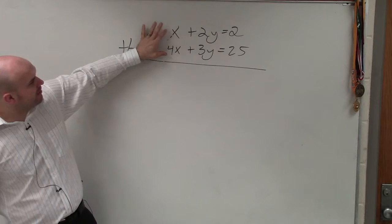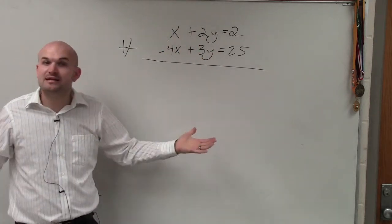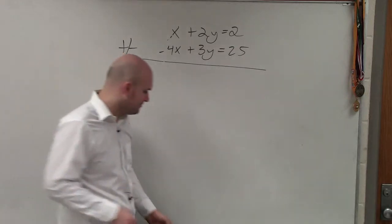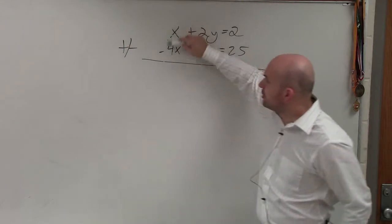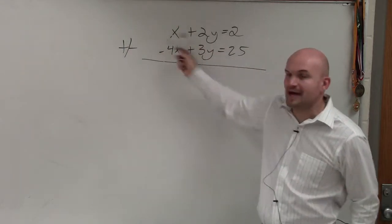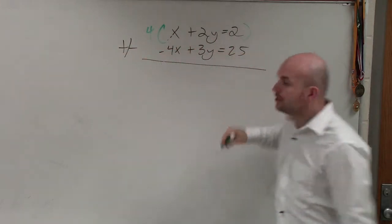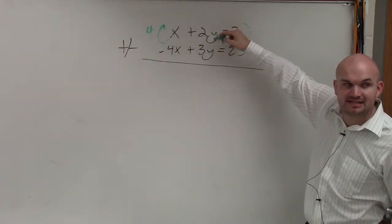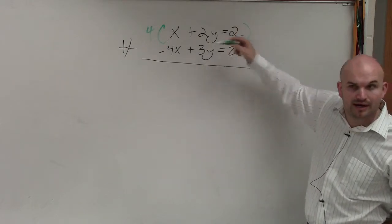And also notice that to get to your common multiple for both of these, I would only have to multiply my top equation by 4. Where here, to get these to 6, I have to multiply the top equation by 3 and the bottom equation by 2.